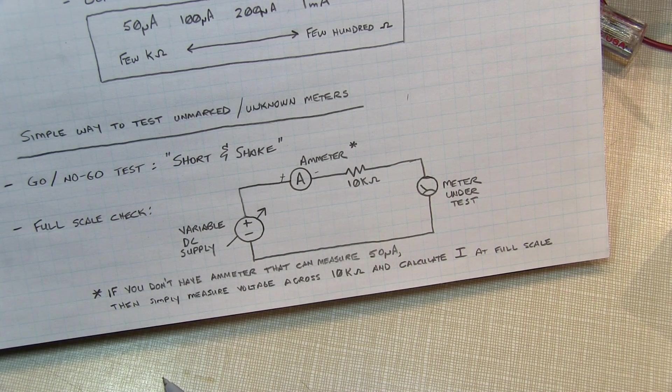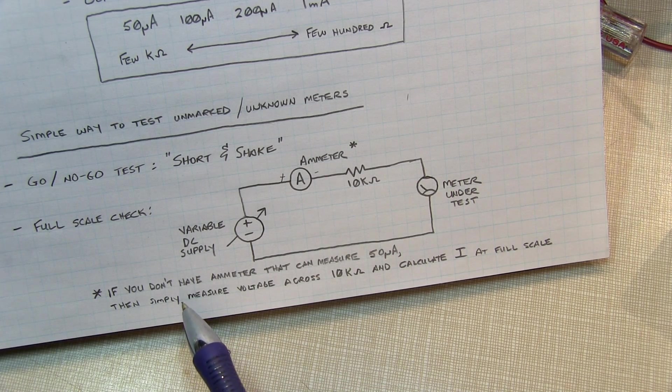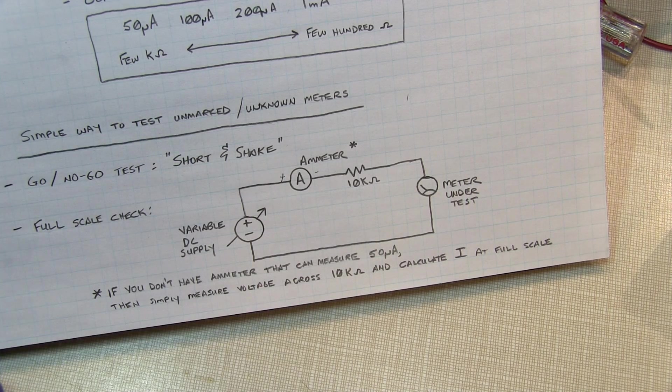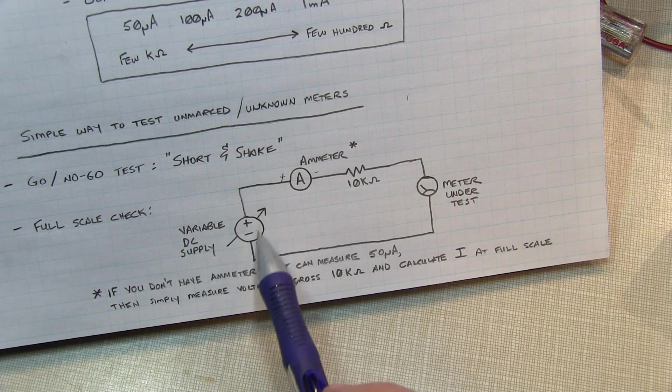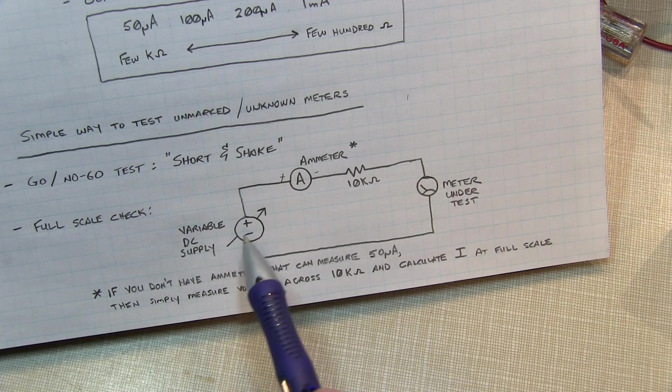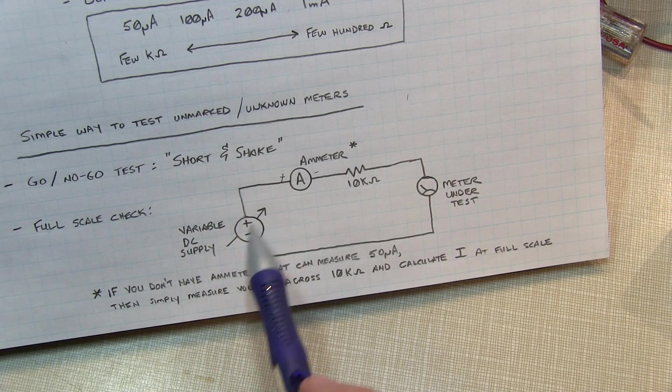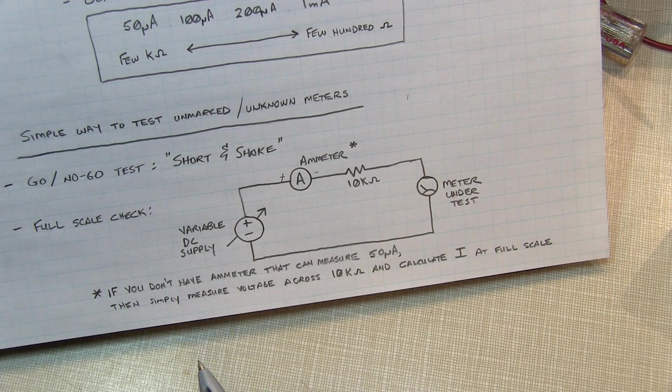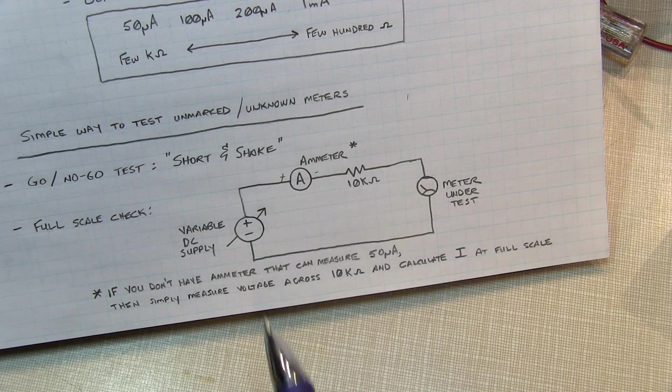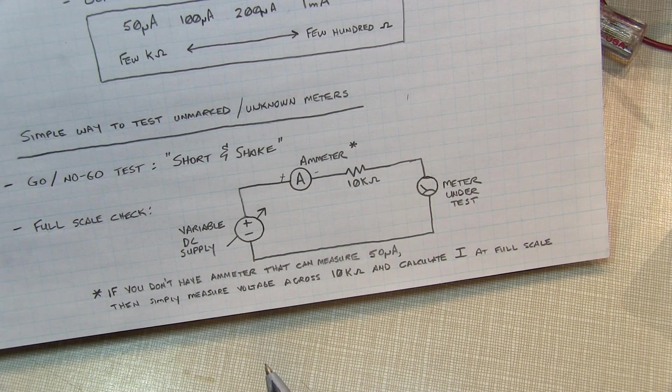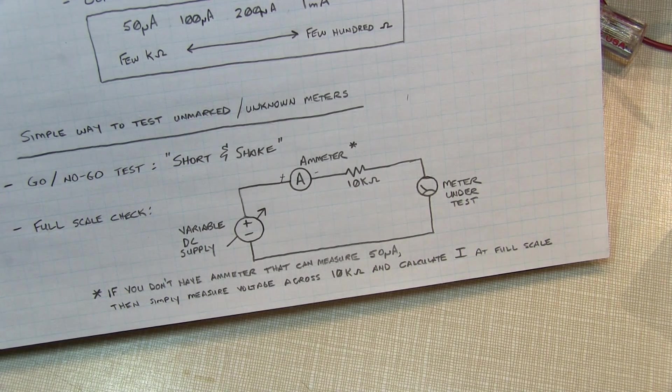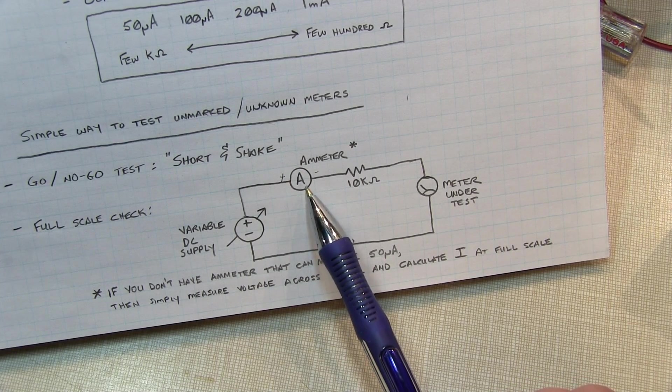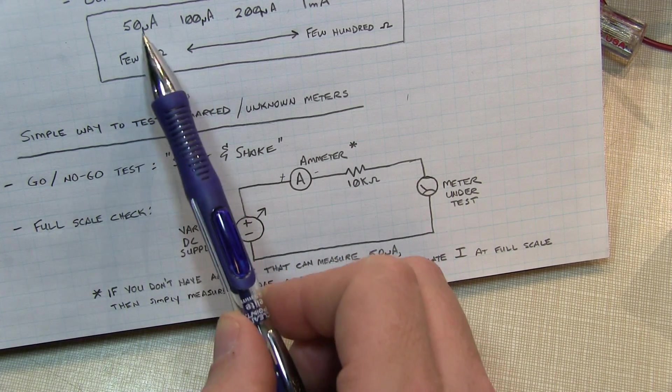A 10K is a kind of a convenient value. Because let's say for example, you've got a meter that's got a 1 milliamp movement. That means you're going to have a little more than 10 volts creating a milliamp through the 10K resistor in the meter. And that's certainly well within the power supply range. But even if in that same setup you're looking at a meter that's got a 50 microamp movement, that means the power supply is going to be dialed up to about a half a volt. And that's still reasonable to set up without having to change power supplies out. So a 10K series resistor is a convenient value to be able to test meters anywhere within this 50 microamp to 1 milliamp range.